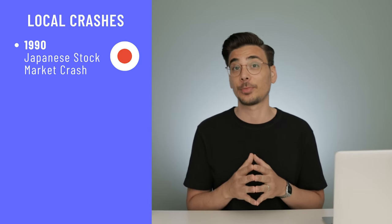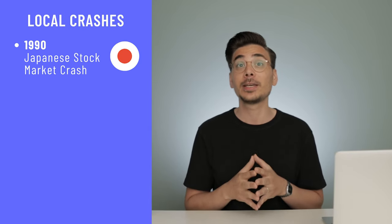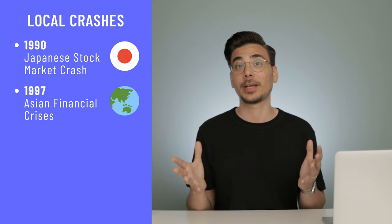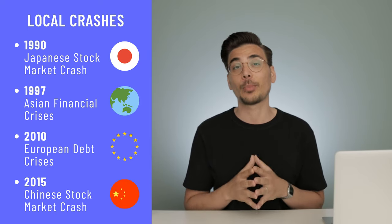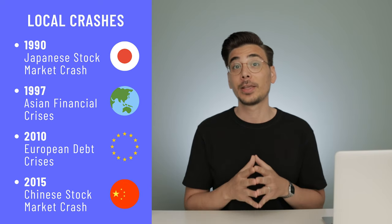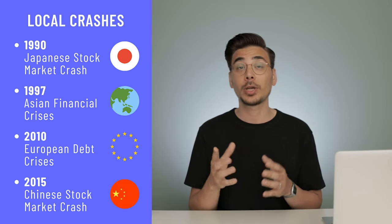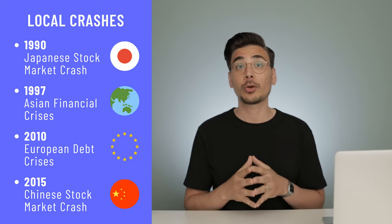Examples include the Japanese stock market crash in 1990, the 1997 Asian financial crisis, the European debt crisis in 2010, and the Chinese stock market crash in 2015. Things can go down in one country, and one country alone can't consistently outperform all the others. Periods of outperformance lead to overvaluations and ultimately regression towards the mean. Being globally diversified is the key to portfolio construction.